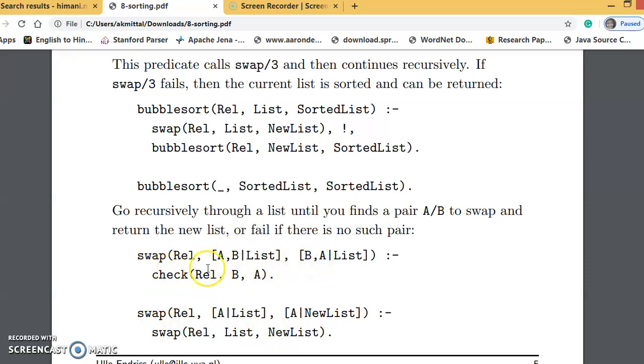Here in the first definition, whatever list is provided is copied into this particular element. The first element will come in A, the second element will come in B, and all the remaining list will go into list. A and B are compared using the check function which we have just discussed. If B is related to A returns true, then B is copied as the first element, A is copied at the second element, and this new list is returned.